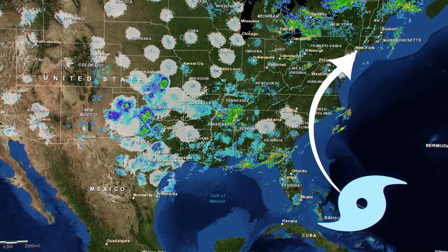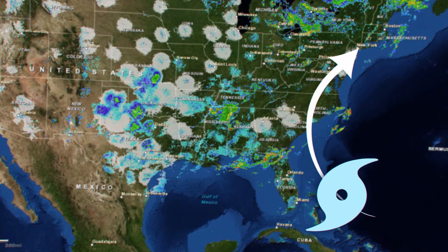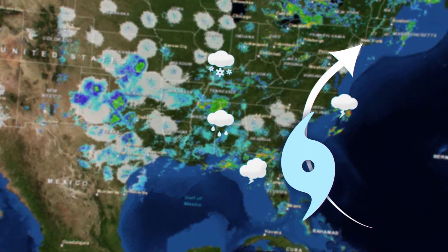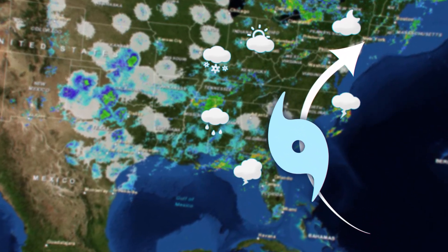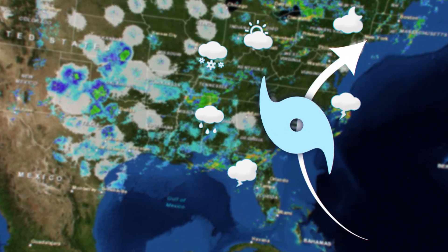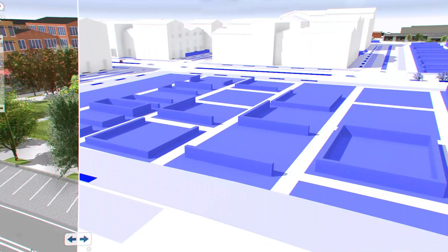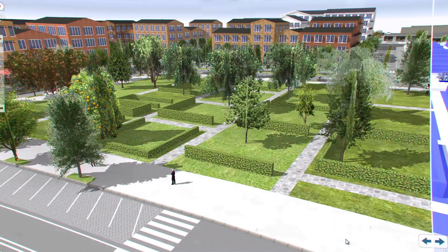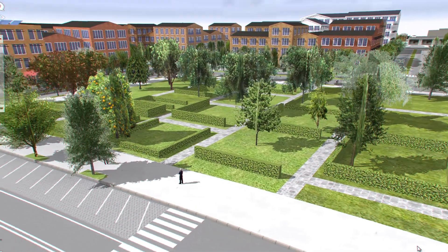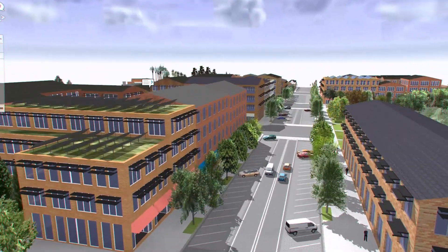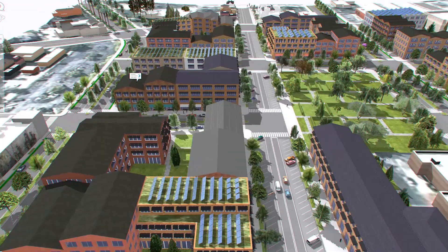For example, a meteorologist might study the paths of hurricanes to predict where and when they might occur in the future. A city planner can choose the best location for a new park or hospital, ensuring that they are built in the place where they're needed the most.